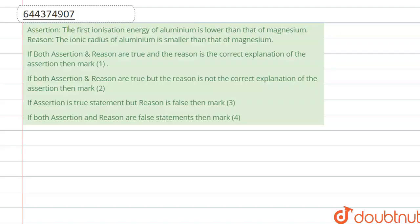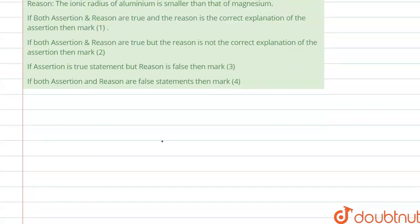Assertion says that the first ionization energy of aluminium is lower than that of magnesium. Let's see here. First we know about what is the ionization energy. So ionization energy is the energy required to remove an electron from its outermost shell.